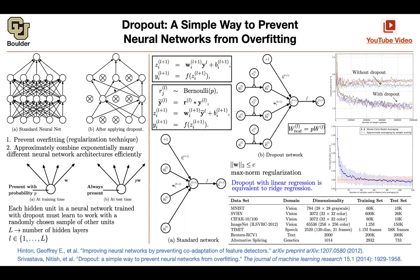Would there be any improvement in performance in a relatively smaller network with dropout? With smaller networks, you need to compare to the size of your data. Even a giant model like GPT-type models today might not be big enough relative to the data. Dropout is typically very useful when your model has a lot of capacity compared to the size of your data and has a tendency to overfit — then dropout is going to be really helpful.